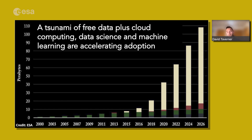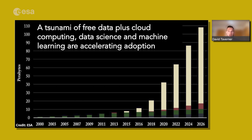Why is it now that there is such a capability for space to address sustainable development issues? In the Earth observation domain, one major reason is the availability of free and open data. This chart shows ESA's EO data archive up to 2026, measured on the left in petabytes, and you can see a huge tsunami of available, free data — largely Copernicus. In parallel, there have been advancements in cloud computing, data science and machine learning that can process that huge volume of data into information and insights that decision makers in governments, NGOs, or companies can use.